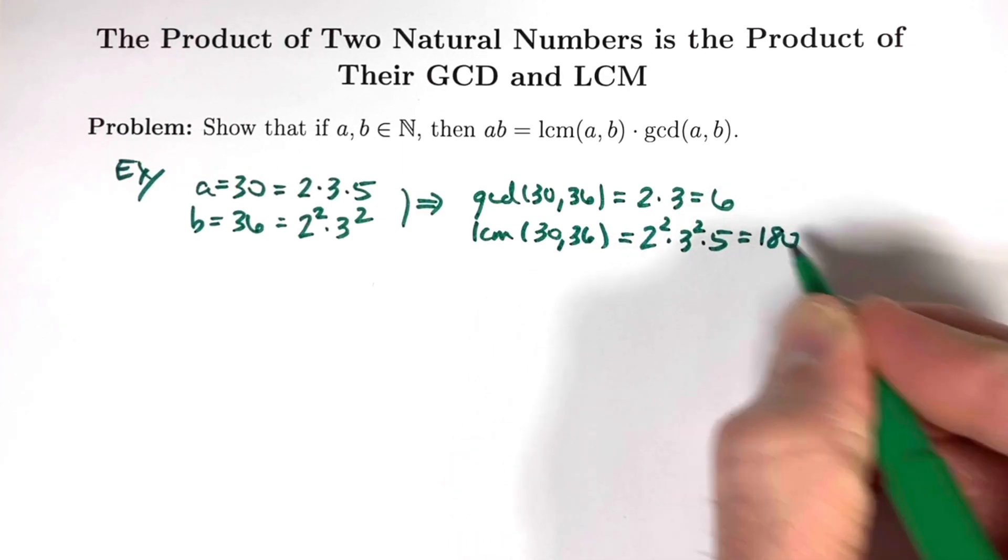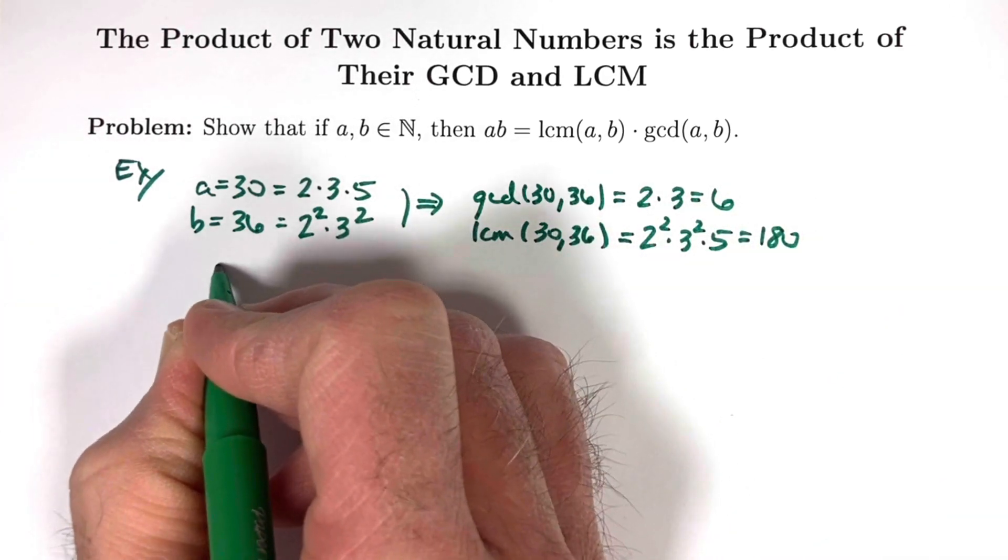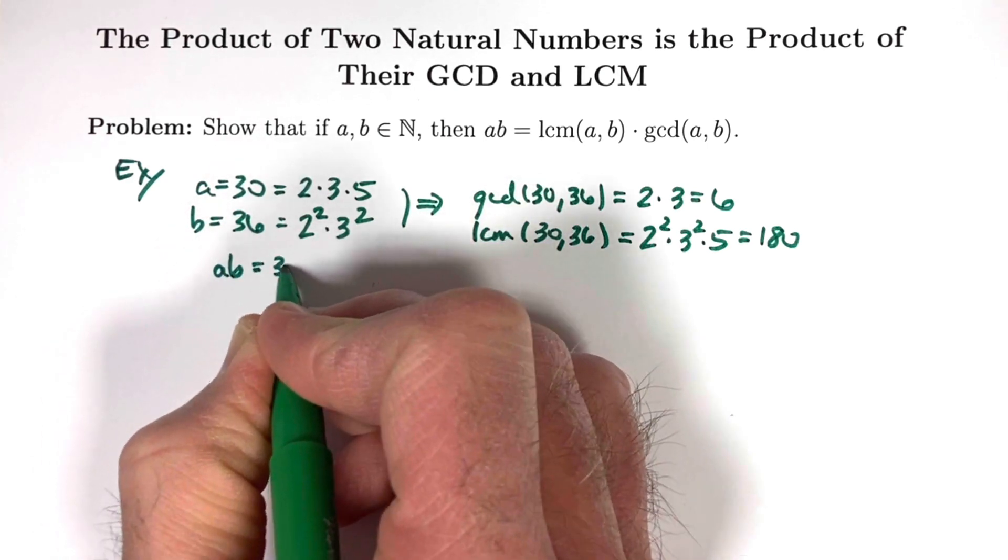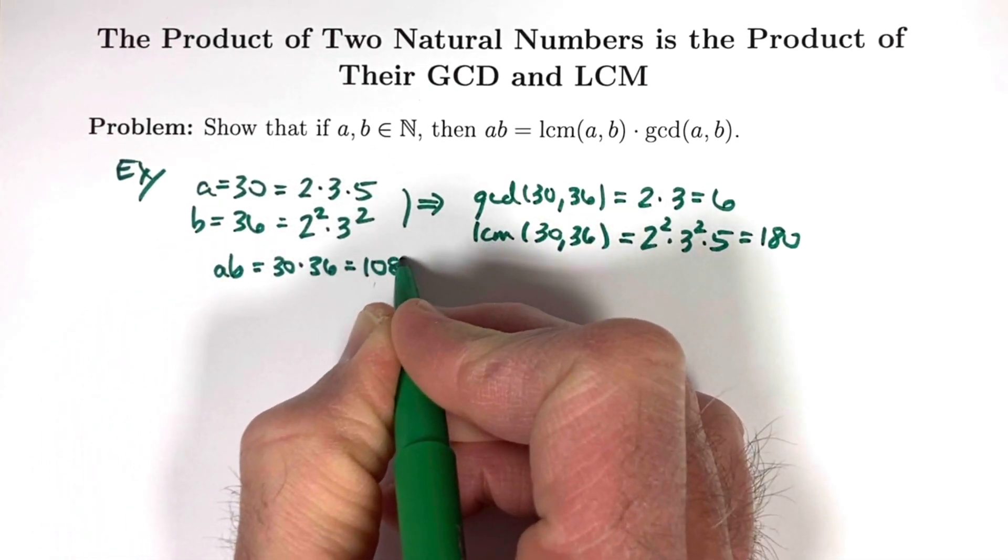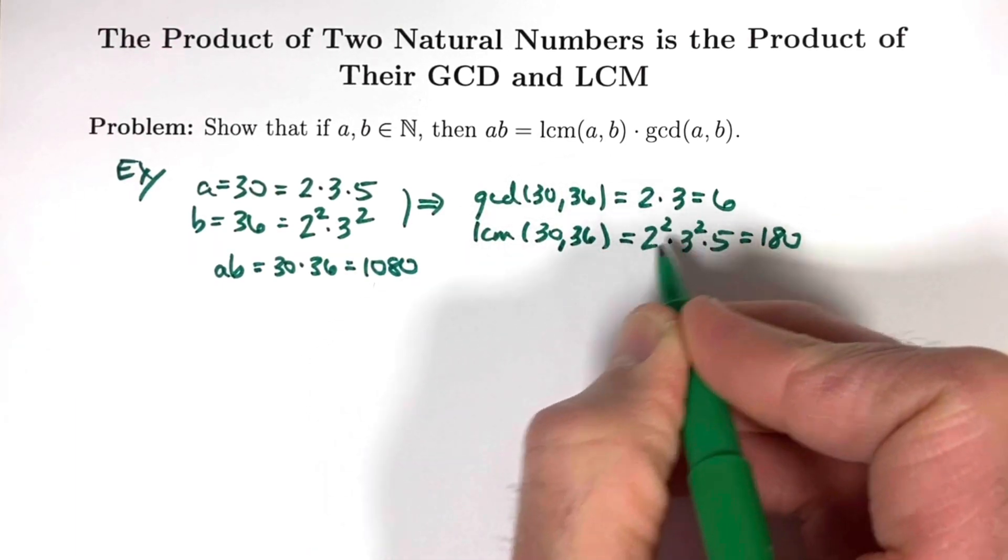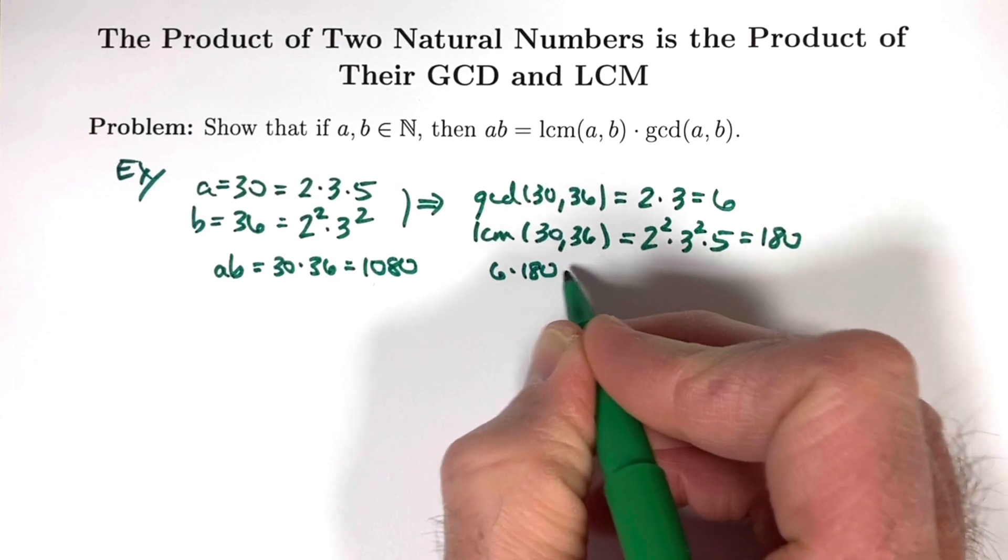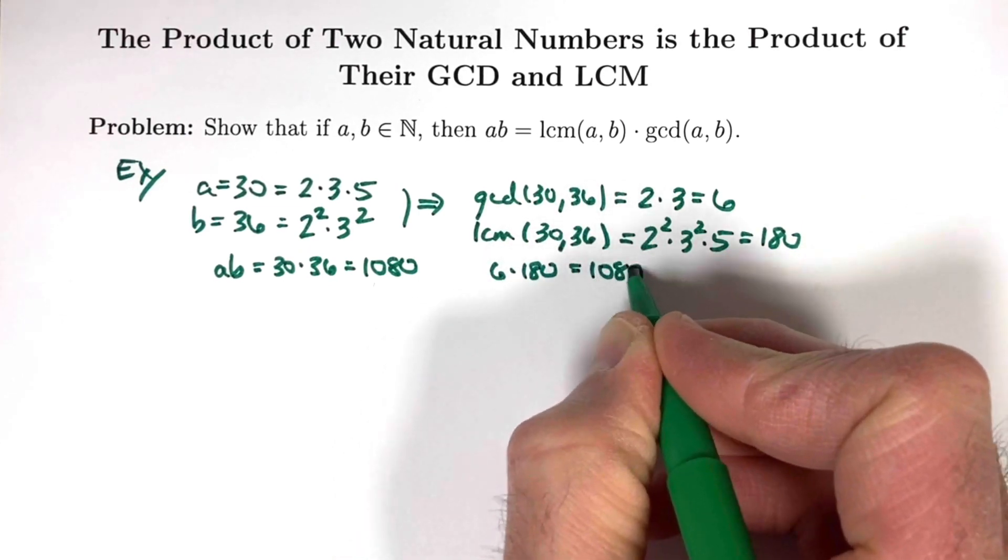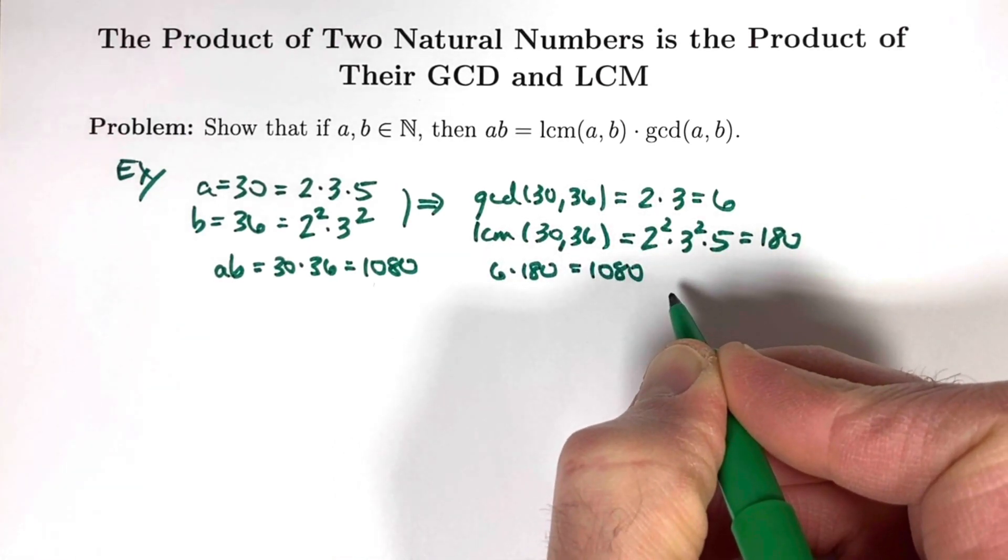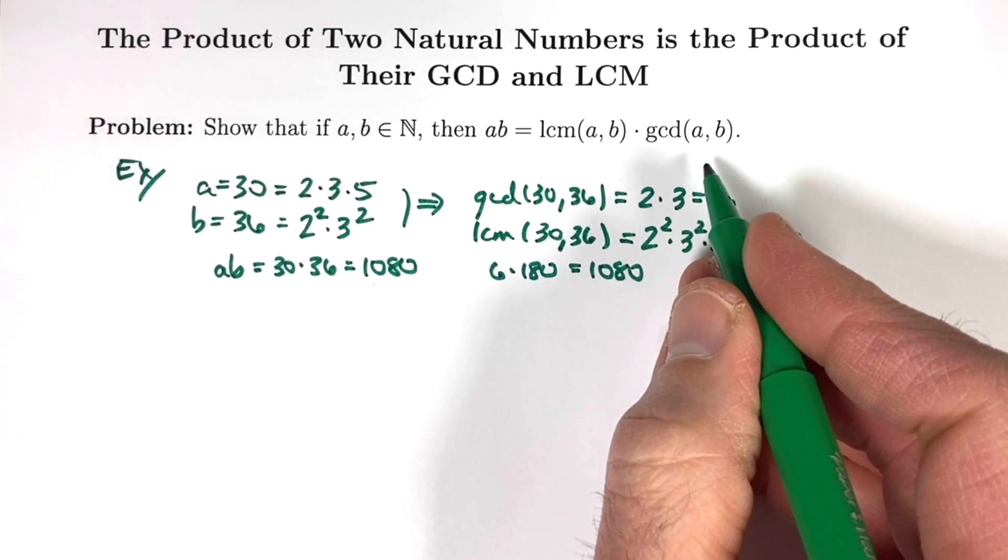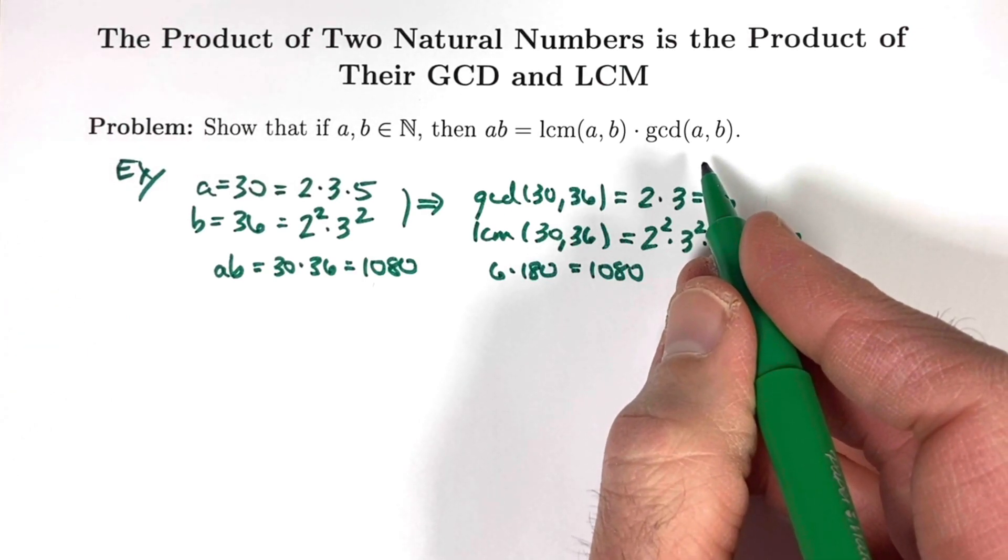You can also now use your calculator to check that A times B, 30 times 36, is 1080, and also the product of these two numbers, the GCD, 6, and the LCM, 180, is also 1080. We have confirmed that this problem works when A is 30 and B is 36. Again, it's not a proof...